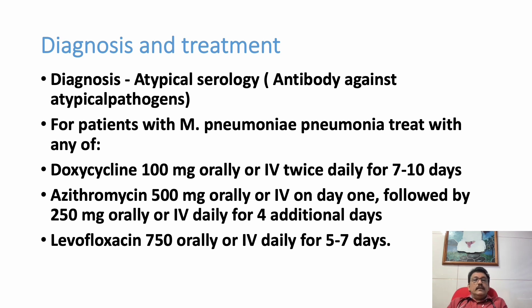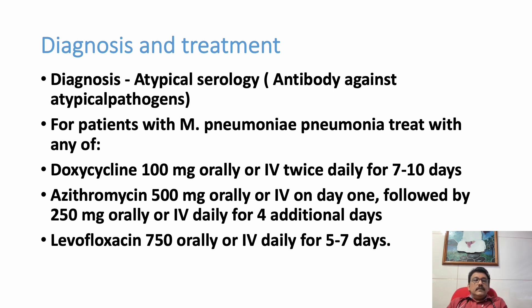Most atypical pneumonias including Mycoplasma can be treated with doxycycline, azithromycin, or levofloxacin. Doxycycline is given as 100 mg twice daily for 7 to 10 days. Azithromycin is available as both injection and tablet — 500 mg oral or IV once daily for 3 to 5 days.